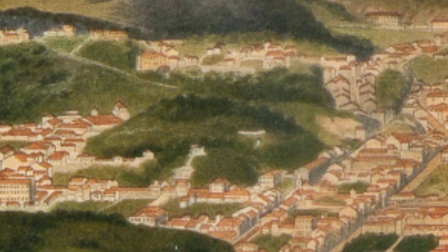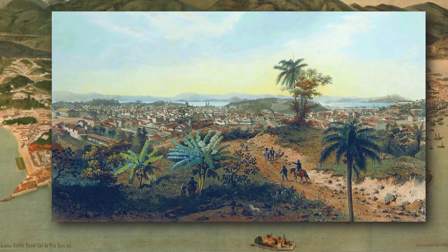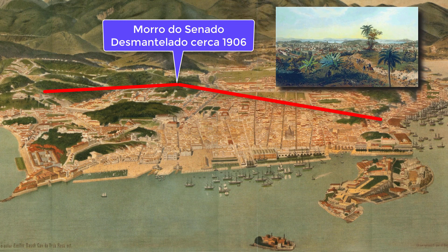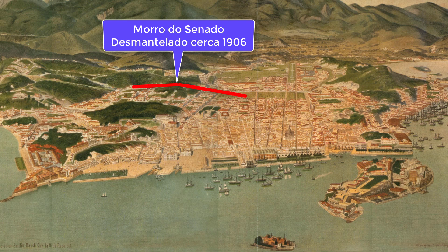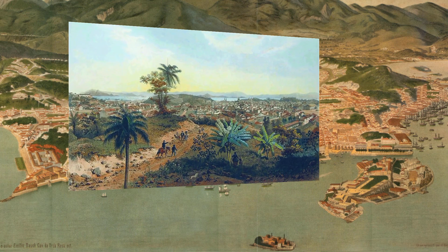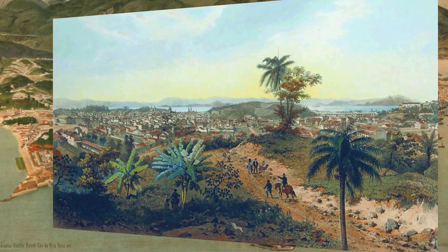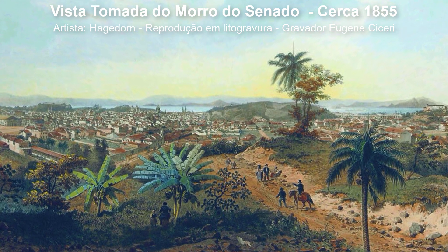We will now show the point from which this perspective was taken on the Morro do Senado, and the field of view using this Vista do Rio in perspective. The field of view shown is what is between these yellow lines departing from the Morro do Senado. We will then go from this panorama of 1875 back to the panorama of 1855, which is seen from the Morro do Senado.